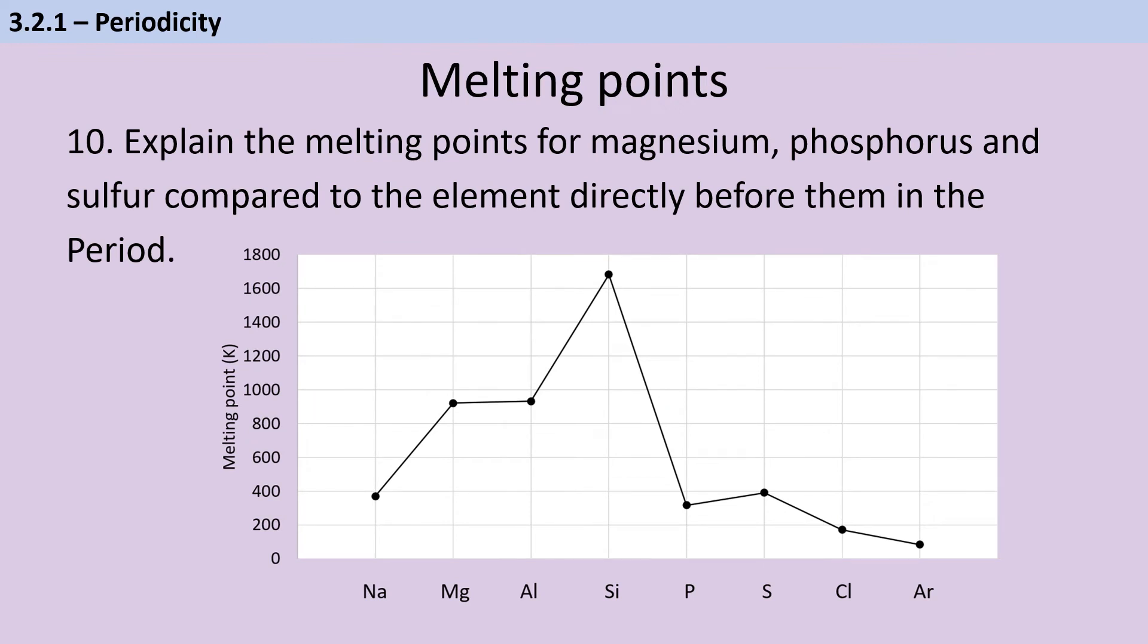To explain these melting points, we need to discuss the bonding. The first three elements in period 3 are all metals, forming giant metallic structures with metallic bonding. That metallic bond is formed from delocalized electrons being attracted electrostatically to positive cations. When we compare sodium and magnesium, those delocalized electrons are just the valence electrons. Sodium only contributes half as many electrons to that sea of delocalized electrons as magnesium. Also, it has a single positive charge, whereas magnesium has a two plus charge. Both factors contribute to the metallic bonding in magnesium being much stronger, resulting in a higher melting point.